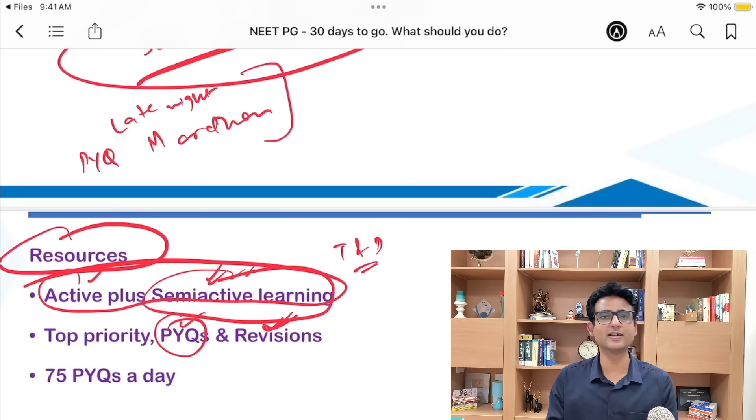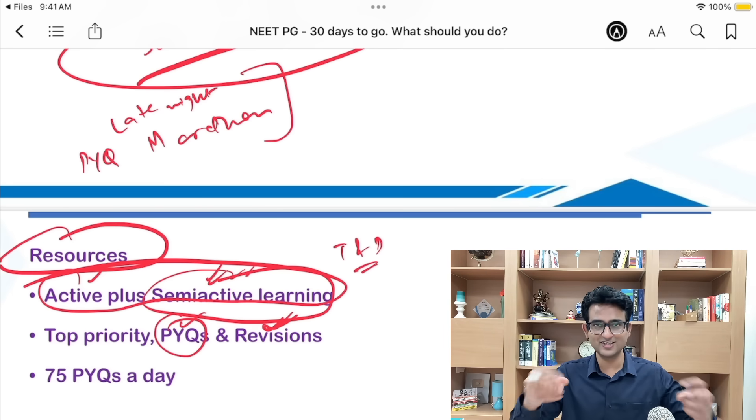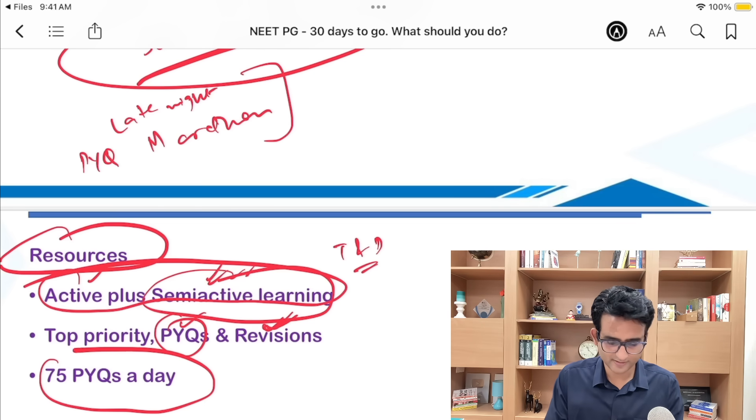This is semi-active learning. Like in our Cerebellum, we have test and discussion. And if you are not feeling like studying, at least listen to what the teacher is saying, because listening to somebody is easier than studying yourself. And aim for 75 PYQs a day. If you can do at least 2000 questions in last one month, and mostly NEET PG and if possible INICET or FMG questions, that is going to give you a definite edge.